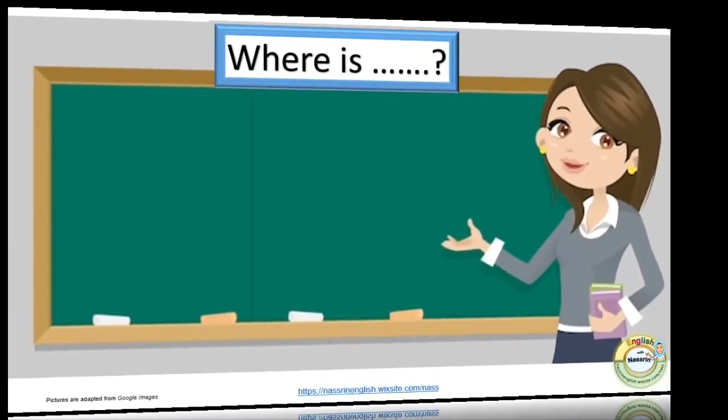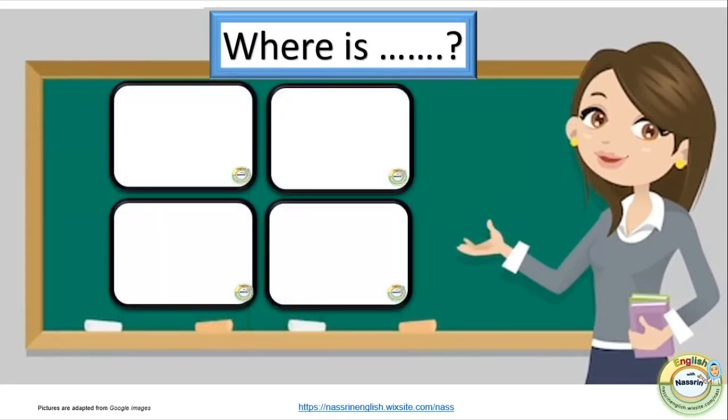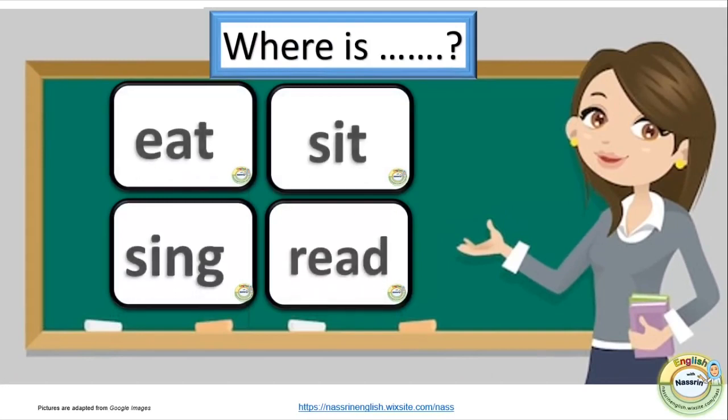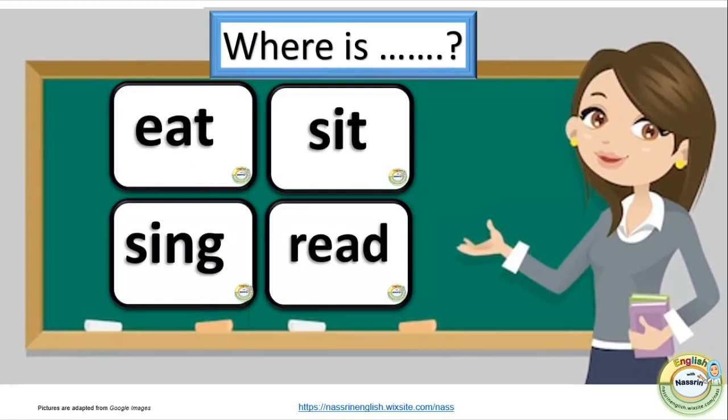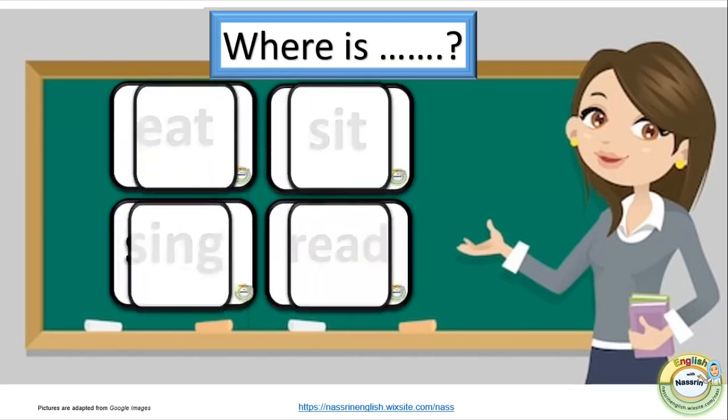The next activity is called where is? Select four or six words and write them on the board or have them as flashcards. Give students time to remember the words on the board and go through their meanings. Then ask the students to close their eyes and hide one of the words or take out one of the words and ask them to recall the missing word.